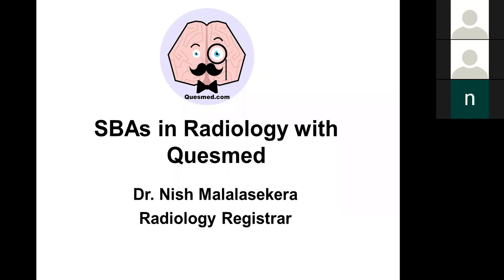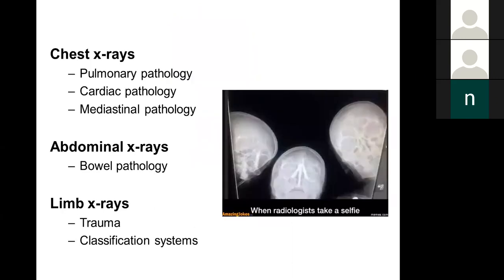There's a lot to cover and I'm not going to try to cover everything. Instead, I'm just going to concentrate on some specific things where I can give you a few tips on how to approach common types of radiological investigations that you might see as a student and as a junior doctor. What I am going to cover today is chest x-rays, specifically looking at lung, cardiac and mediastinal pathology, a little bit on bowel pathology in abdominal x-rays and then a tiny bit on limbs.